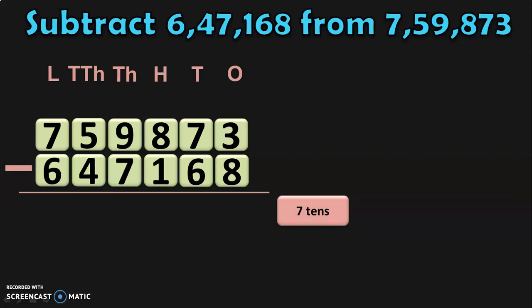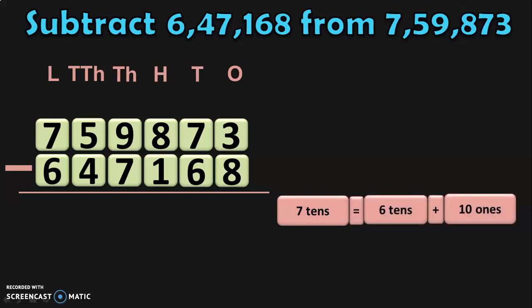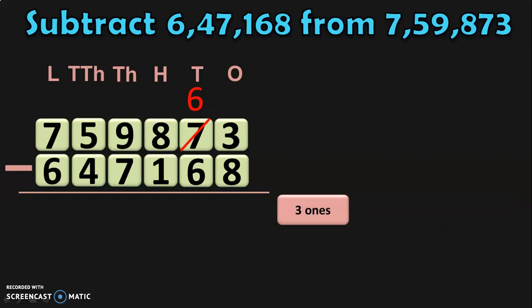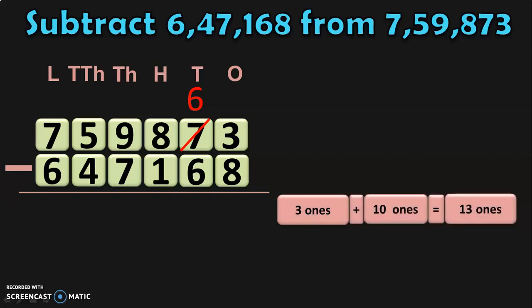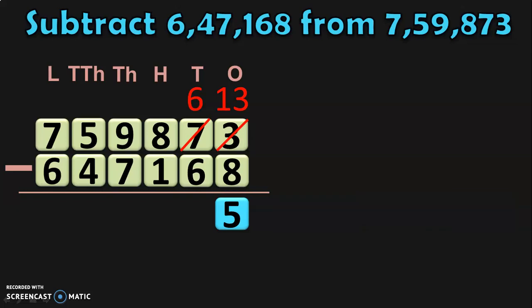Move on to the tens place where you have 7 tens. 7 tens can be regrouped as 6 tens plus 10 ones. So, retain the 6 tens in the tens place and take the 10 ones to the ones place. In the ones place, you already have 3 ones. 3 ones plus 10 ones gives you 13 ones. Now in the ones place, you have 13 ones and you can do 13 minus 8, which is 5. Move on to the tens place where you have 6 minus 6, which gives you 0.